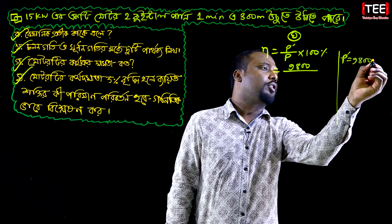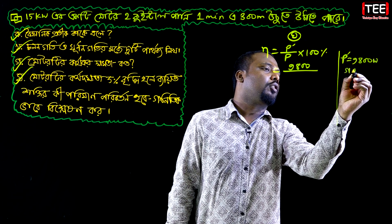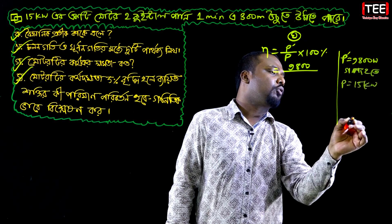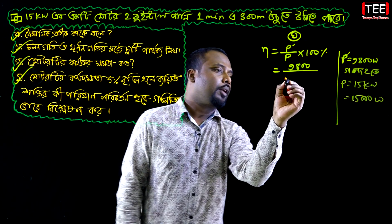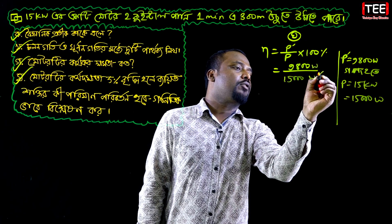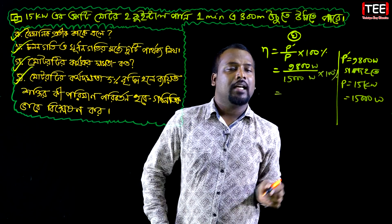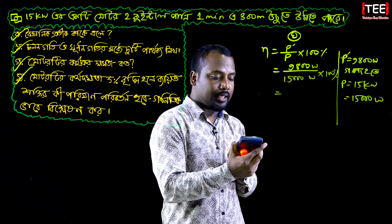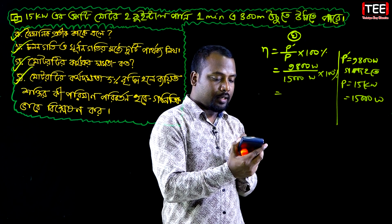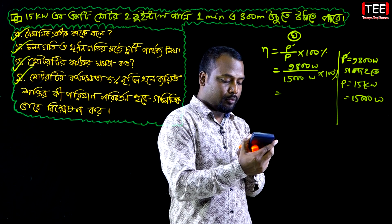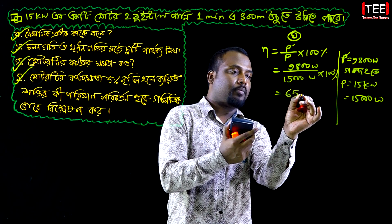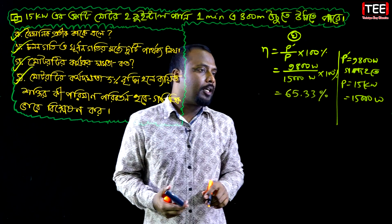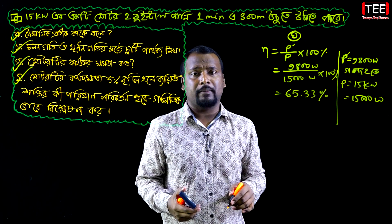There is a watt — the PR is 15 kW and that means we are working with 15 kW. So here we can find the difference: 9800 is compared to 15000, giving us approximately 65.33%.